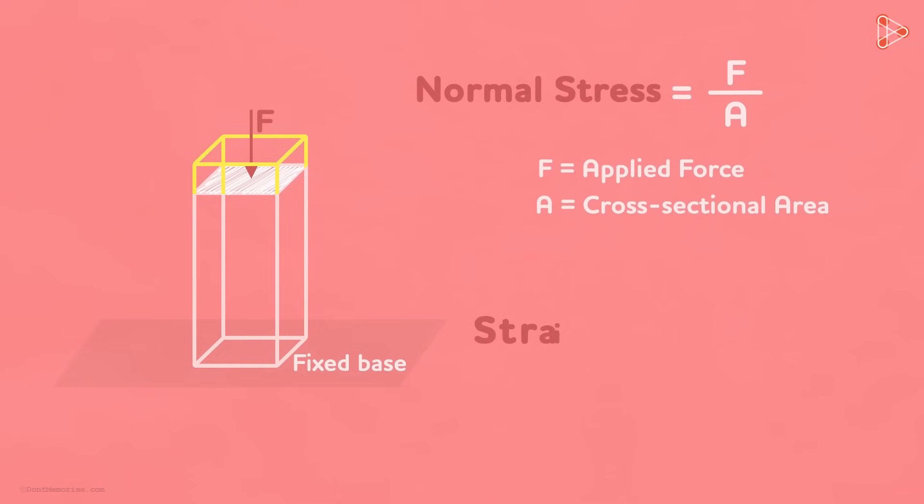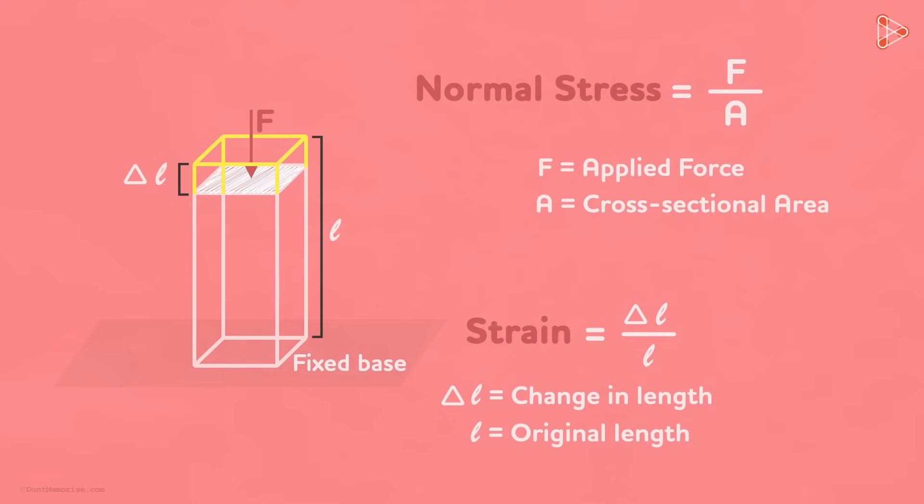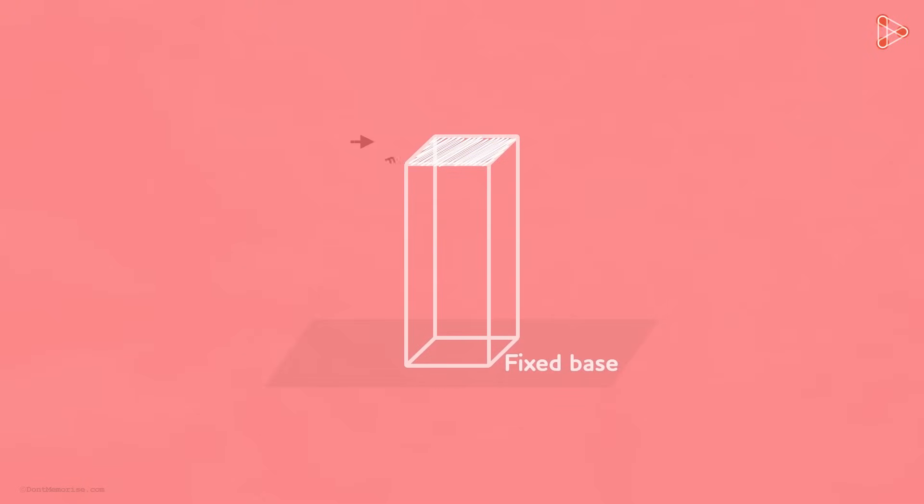This will result in a normal strain in the beam which is given by Delta L over L where Delta L is the change in length and L is the original length. Now suppose that we apply a force in this direction, parallel to area A.